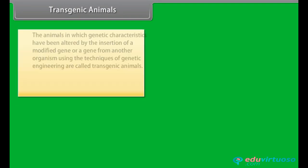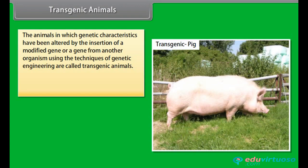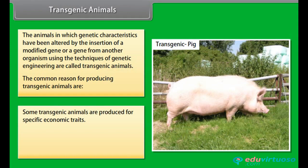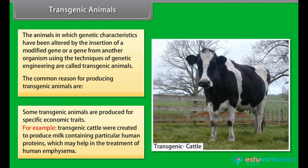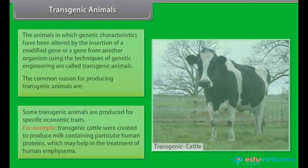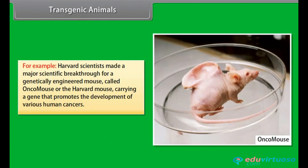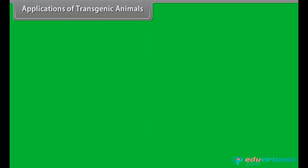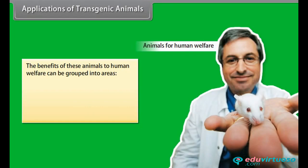Transgenic animals. The animals in which genetic characteristics have been altered by the insertion of a modified gene or a gene from another organism using the techniques of genetic engineering are called transgenic animals. Common reasons for producing transgenic animals include specific economic traits. For example, transgenic animals were created to produce milk containing particular human proteins which may help in the treatment of human emphysema. Harvard scientists made a major scientific breakthrough with a genetically engineered mouse called Oncomouse, or the Harvard mouse, carrying a gene that promotes the development of various human cancers. Applications of transgenic animals benefit human welfare in agriculture, medicine, and industry.